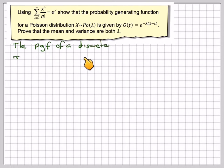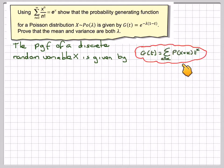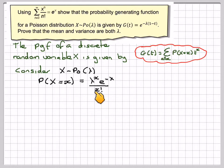The probability generating function of a discrete random variable x is given by g(t) equals the sum over all x of the probability that X equals x, times t to the x. Consider x belonging to a Poisson(λ) distribution. The probability that X equals x is λ to the power of x times e to the minus λ, over x factorial.